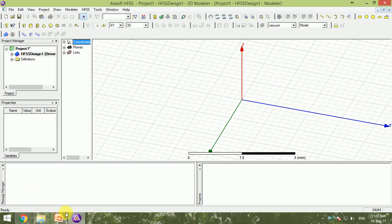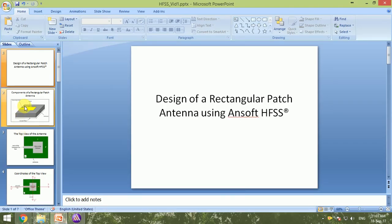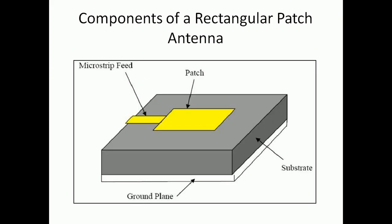Let's see what are the dimensions of a rectangular patch antenna. This is the basic structure: it has a substrate, which is a dielectric material, a ground plane which is a copper sheet, and a patch which is also a copper sheet. In this case we are going to use a microstrip feed line to feed this antenna. There are many kinds of feeding techniques such as coaxial feeding, proximity feeding, etc., but we are going to use microstrip feed.